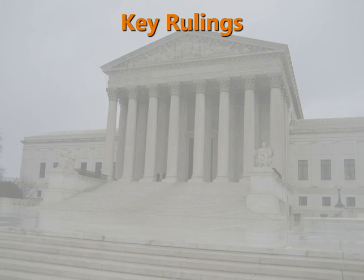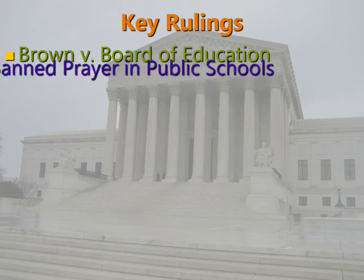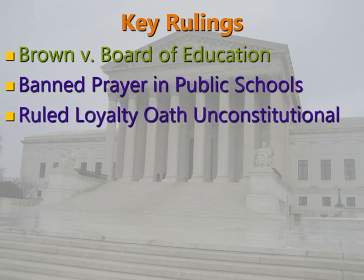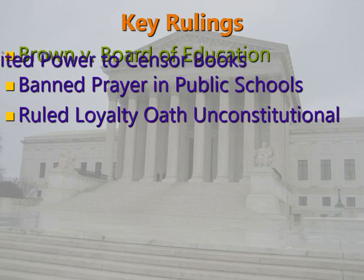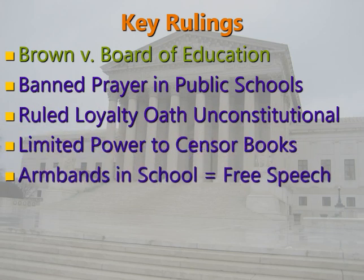Maybe the most important ruling ever decided by the Warren Court — and perhaps the most famous Supreme Court case of all time — was Brown v. the Board of Education, which said there should be no segregation in public schools or any public place. The Warren Court also banned prayer in public schools; prior to that, some schools started the day with a prayer. The Supreme Court also banned loyalty oaths — as in the film Good Night and Good Luck — and limited the government's power to censor books.